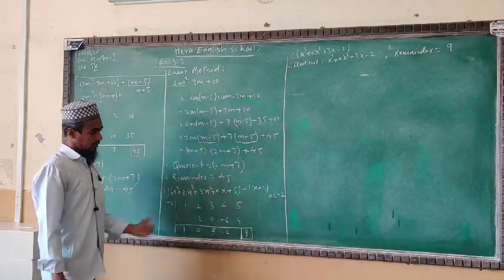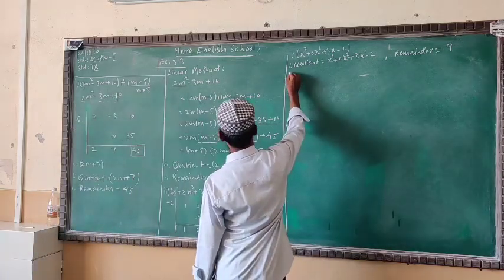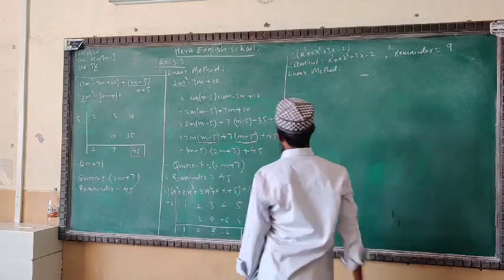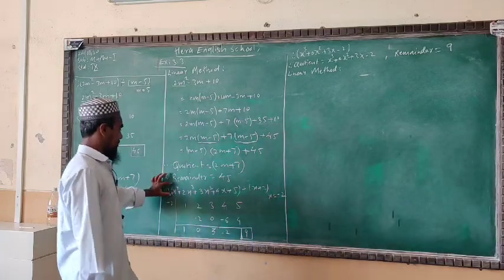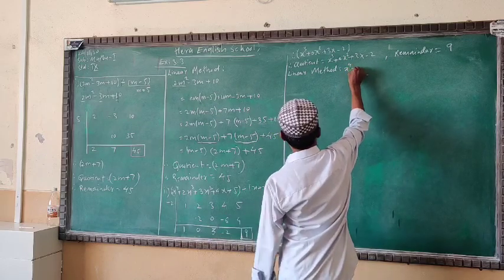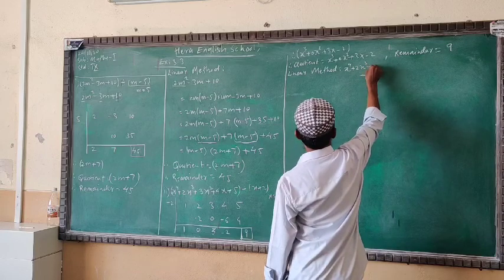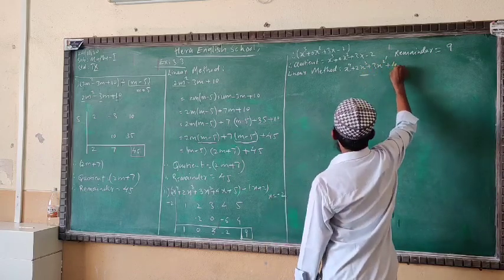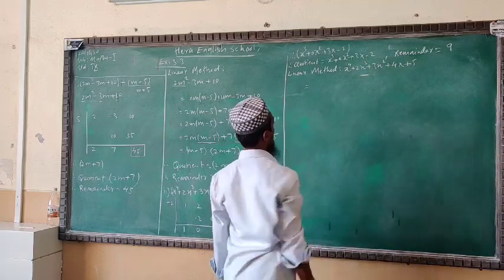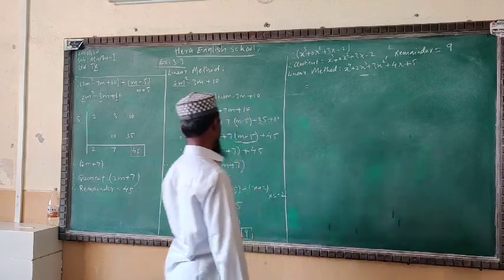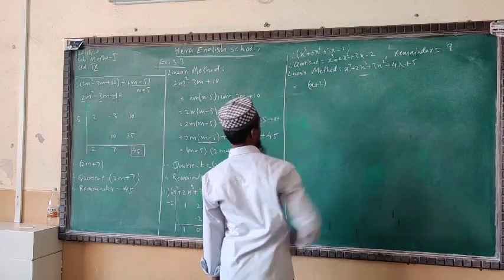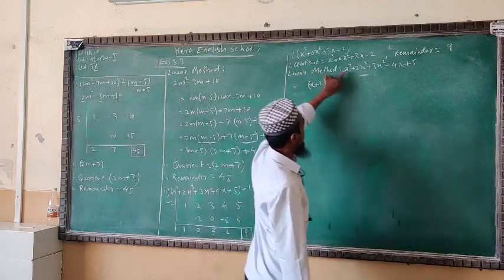For the linear method, our dividend is x⁴ plus 2x³ plus 3x² plus 4x plus 5, divided by x plus 2. Write the divisor x plus 2 as it is. The first term of the dividend has power 4. From power 4, cancel the 1 from x plus 2's x, giving x³. This is the first term of the quotient.